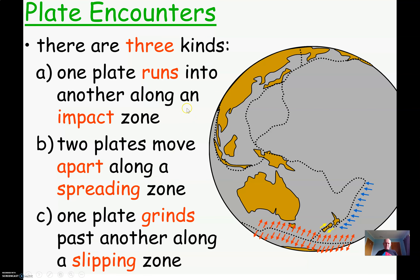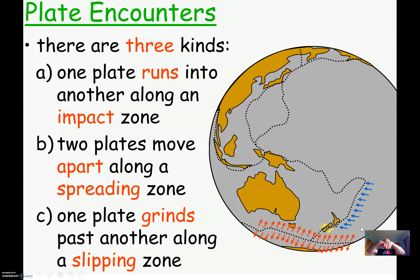There are three kinds of plate boundary. We've got one where one plate runs into another — squeezing together very slowly — and there are two types of that which we'll get onto. Two plates can also move apart, tearing apart, and that happens down in the south of New Zealand in the Antarctic Southern Ocean. And there's another one shown by these two yellow arrows here, where one plate slides past another — and that's predominantly what's happening in the South Island.